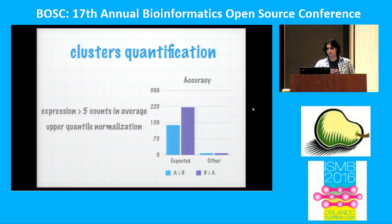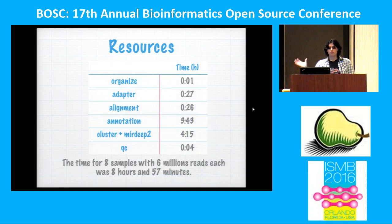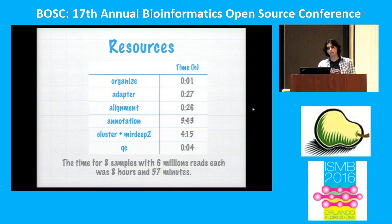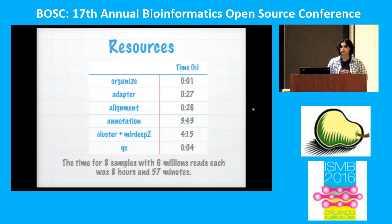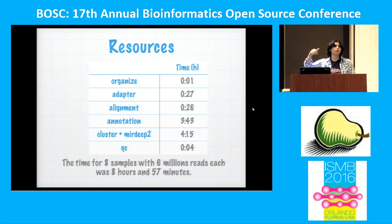bcbio took about nine hours to run all tools for eight samples. The tools that took the most time were seqcluster and miRDeep2. The annotation step with the tRNA and microRNA tools was faster.